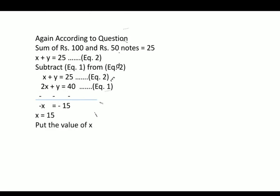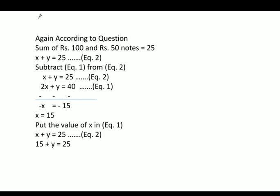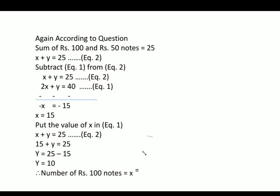Now put the value of x in equation 1: x plus y equals 25. Substituting x equals 15: 15 plus y equals 25, so y equals 25 minus 15, giving y equals 10. Therefore the number of Rs. 100 notes equals x equals 15 and the number of Rs. 50 notes equals y equals 10.